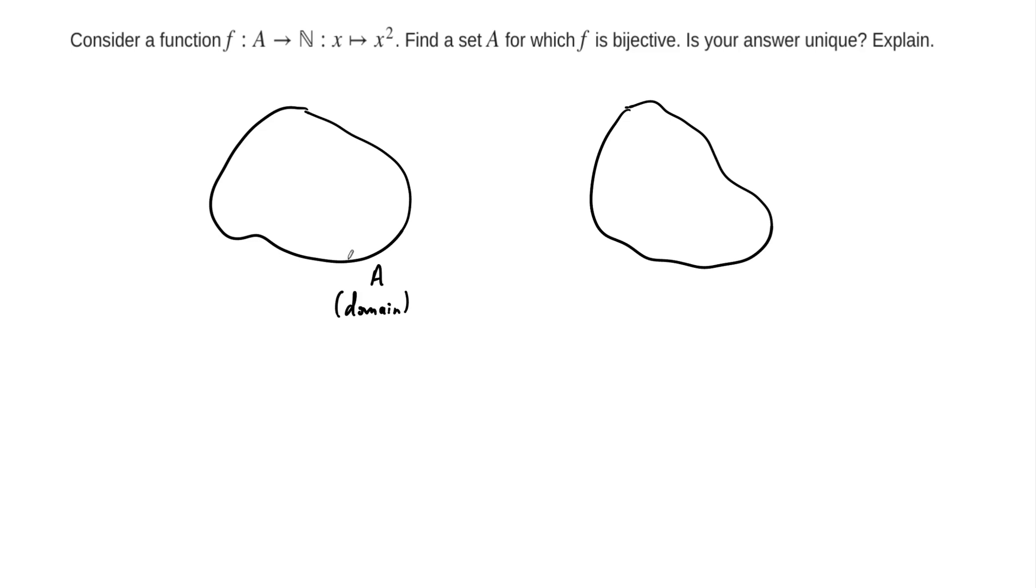It doesn't have to be on the left, but just for this picture it's on the left. And on the right-hand side, this set is the codomain, which we're told for this example is the natural numbers ℕ. This is the codomain.